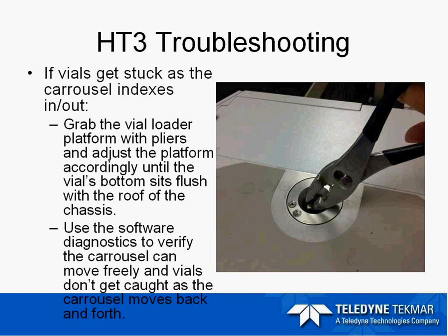A common issue is when the carousel indexes between positions 30 and 31 — sometimes we get an index error or a vial gets stuck. This is when it transitions from the outer ring to the inside ring. Sometimes you just need to pull up a little bit on the vial loader foot to help it clear and move back and forth more smoothly.